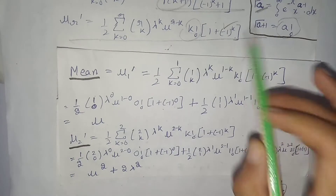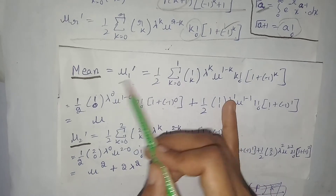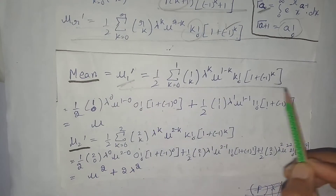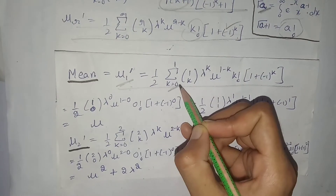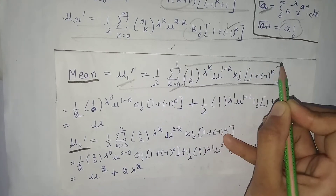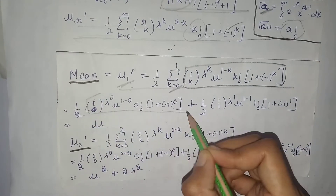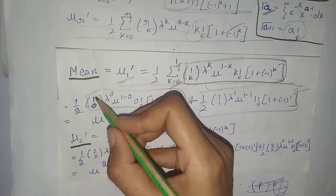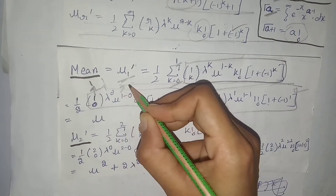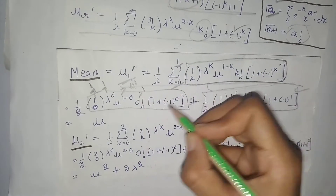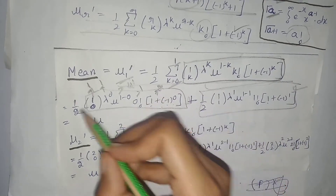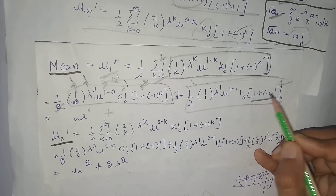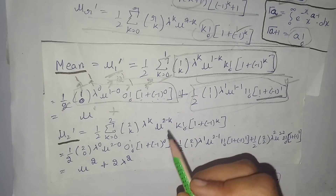Using this relation, we find the first moment about origin, which is the mean of the two-parameter Laplace distribution. We set r = 1 to get μ₁′. Expanding the summation: for k = 0, the combination value is 1, the factorial is 1, and μ raised to power 1 is μ — giving 2/2 = 1, so we write μ. For k = 1, the term (1 − 1) = 0, so the whole term becomes 0. Therefore, the mean equals μ.